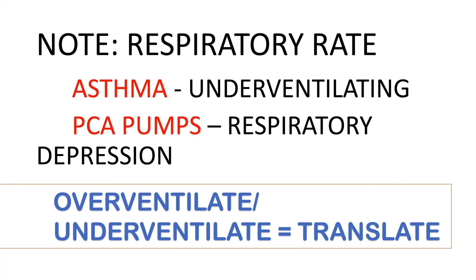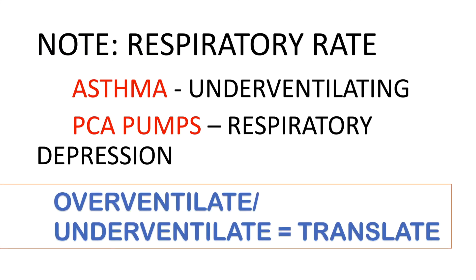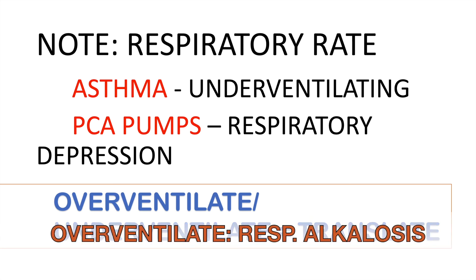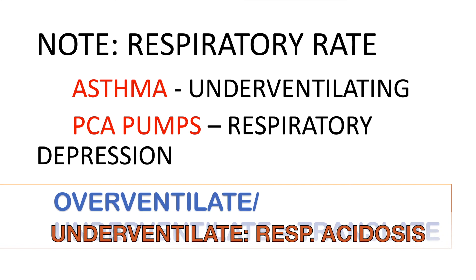If we speak about asthma, the patient will be under-ventilating. Is it lung? Yes. Is the patient under-ventilating? Yes, because in asthma there is constriction of the airway. So the patient may suffer from respiratory acidosis. Meanwhile, with PCA pumps, the patient may suffer from respiratory depression because of the side effects of the medications. So note principle 3: over-ventilate — that is respiratory alkalosis. Under-ventilate — that is respiratory acidosis. Over-ventilate, under-ventilate, then translate.